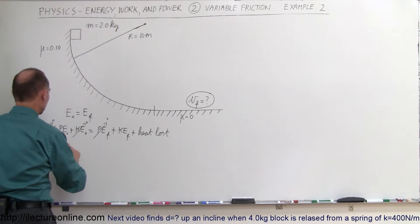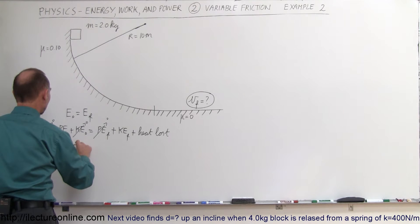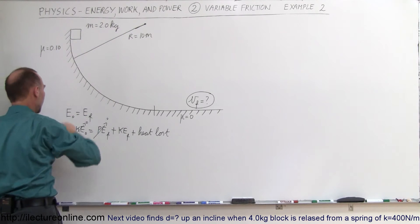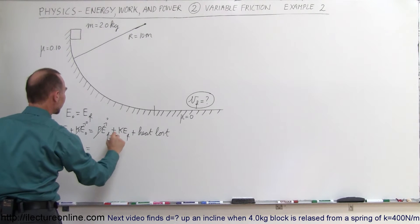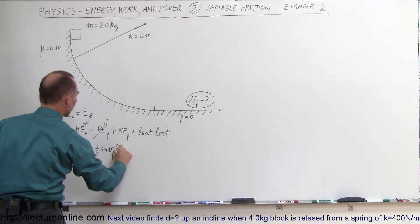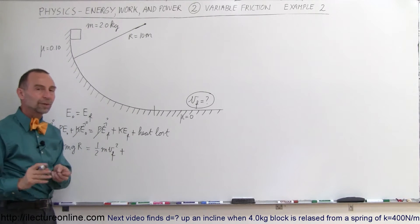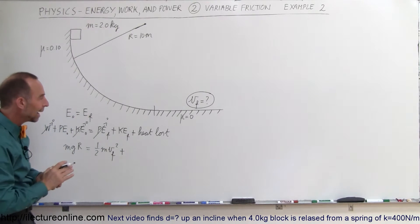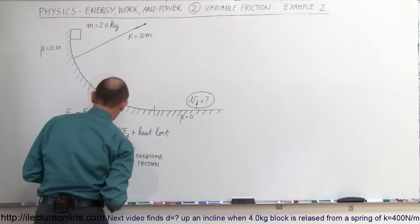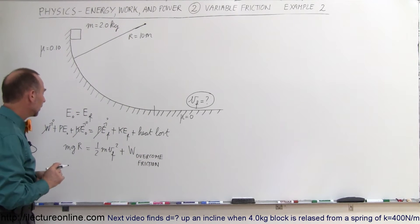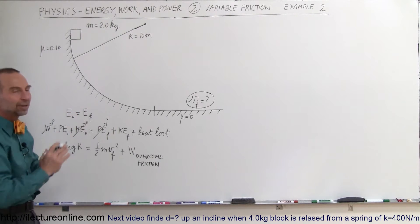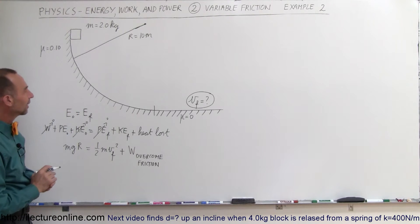There will be kinetic energy because all of the potential energy will have converted into kinetic energy, plus whatever heat was lost to overcoming friction. So the initial potential energy is mg times r — the radius of curvature equals the height of the block. That equals the final kinetic energy, one-half mv_final squared, plus the heat loss from the work done to overcome friction. We'll calculate that work separately.